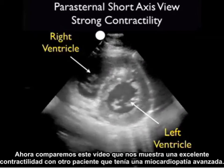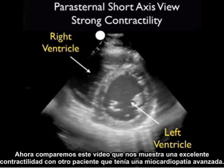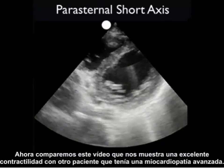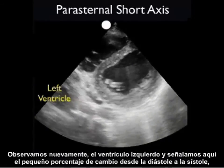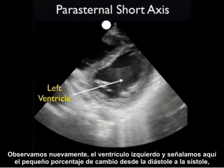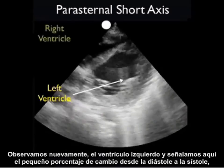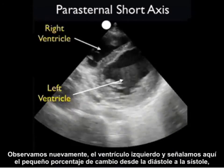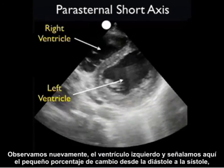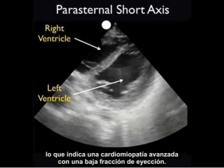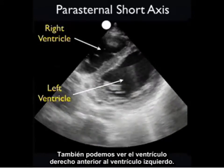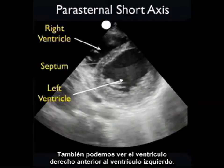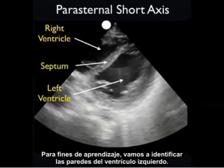Now let's contrast this video clip showing excellent contractility with another patient who had an advanced cardiomyopathy. Note again the left ventricle and note here the poor percentage change from diastole through systole, indicating an advanced cardiomyopathy with low ejection fraction. We can also see the right ventricle anterior to the left ventricle.